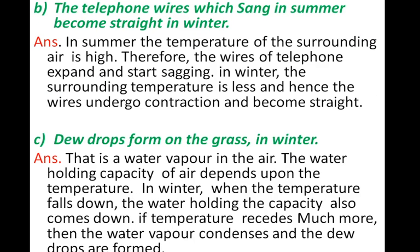Question: the telephone wires which sag in summer become straight in winter - give scientific reason. Answer: in summer, the temperature of the surrounding air is high, therefore wires of telephone expand and start sagging. In winter, the surrounding temperature is less and hence the wires undergo contraction and become straight.